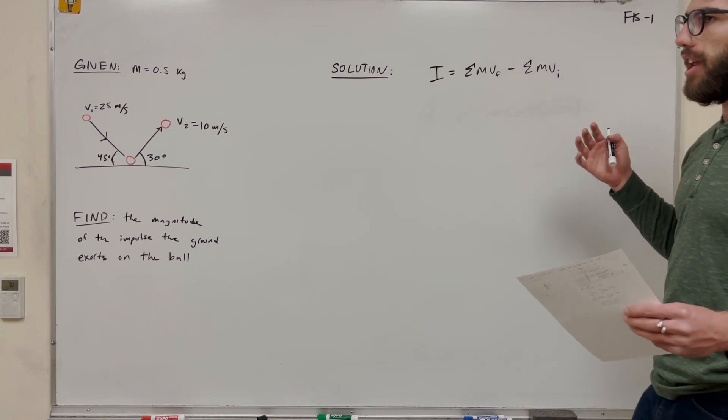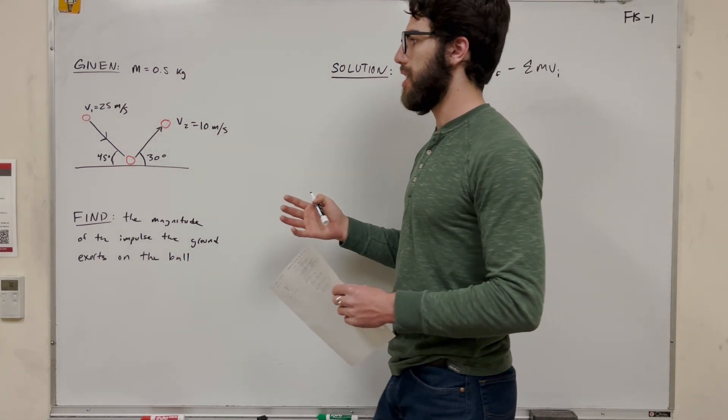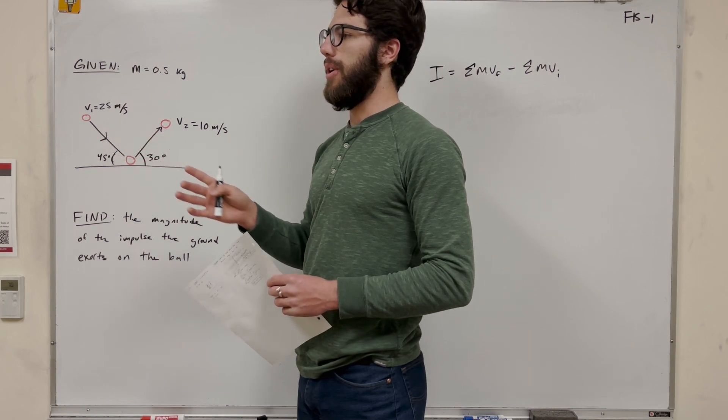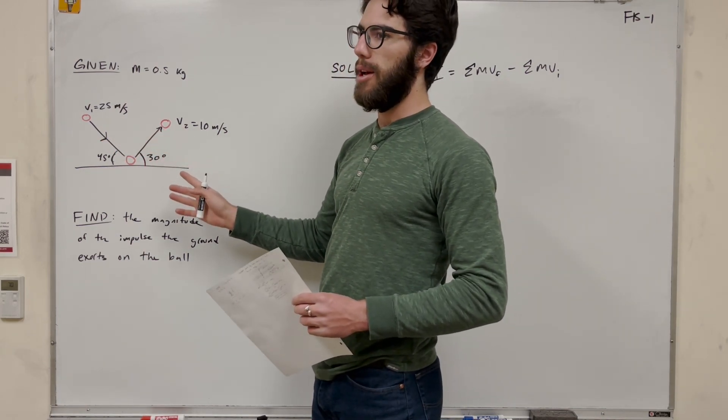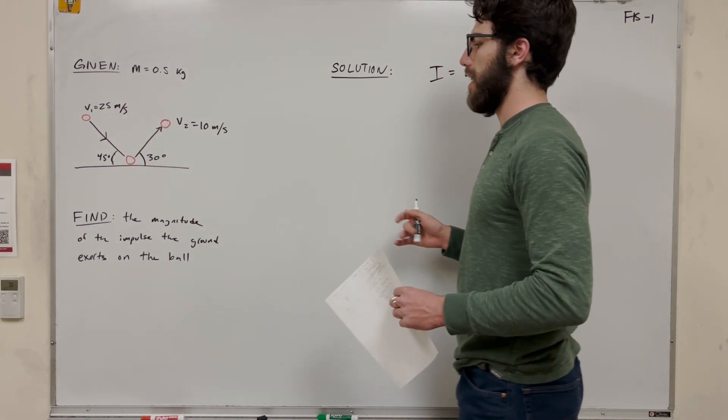So to do that, we need to break it up into x and y forms. We need to decompose each of these vectors and we need to do the impulse in the x direction and the impulse in the y direction. That's how we're going to find the magnitude of the impulse.